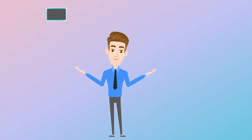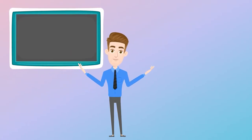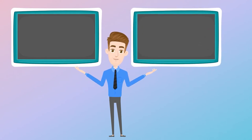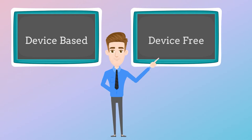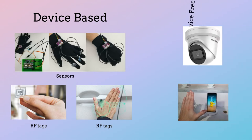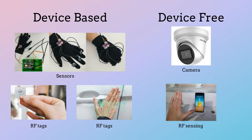There are mainly two types of sensing methods used in hand gesture recognition. They are on-body device-based methods and device-free methods. Inertial sensors and RF tags are some examples for device-based methods. Cameras, acoustic sensing and radio frequency sensing are some examples for device-free methods.